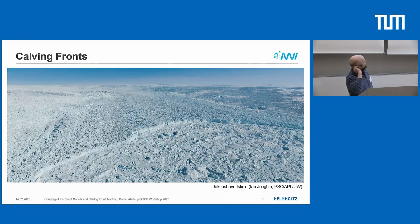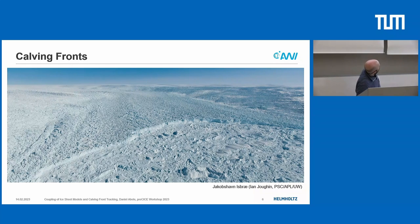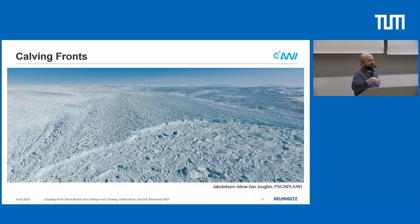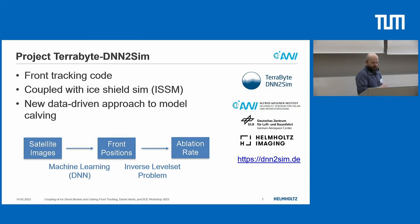We're going to talk about calving fronts now. This is Jakobshavn glacier in Greenland. The arc in the middle is the front of the glacier, and as you can see from the debris in front, there are constantly large and small pieces breaking off. This process is called calving. Because of the calving, melting of the ice, and the forward movement, the front of the glacier is constantly changing position — it moves forward and backwards. If you want to model the ice correctly, you need to keep track of the position of the front during the simulation, and this is what we are working on in our project.